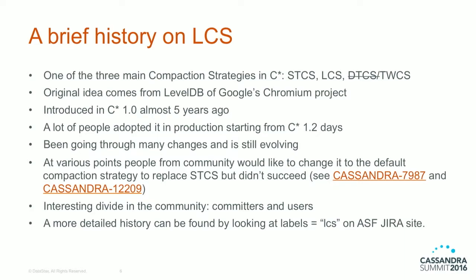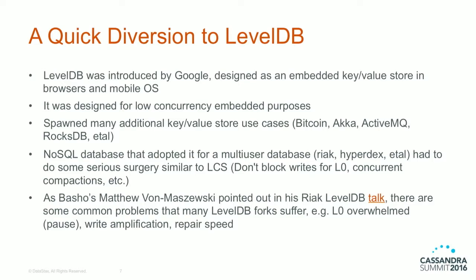Here's a brief history of LCS. It's one of the core compaction strategies and has been around since Cassandra 1.0 — almost five years now. There's also Size-Tiered Compaction Strategy, and TWCS is replacing DTCS. LCS was heavily adopted, sometimes by advanced users and sometimes by newer users who misunderstand its goals, which we'll cover later in the talk.